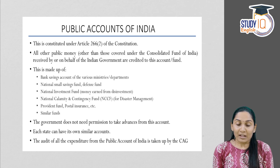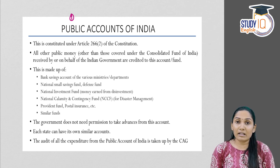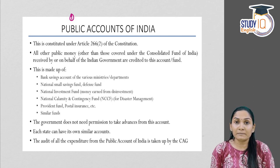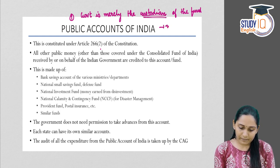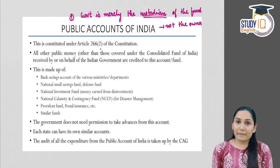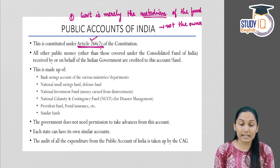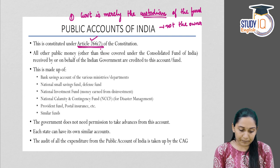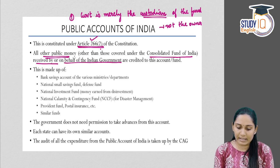Next is Public Accounts of India. The key point is that the fund kept under Public Accounts is not the government's own fund — the government is not the owner but merely the custodian. Public Accounts of India has been constituted under Article 266-2 of the Constitution. All public money other than that covered under the Consolidated Fund of India received by or on behalf of the Indian government is credited to this account.